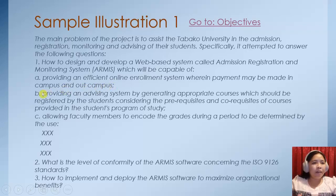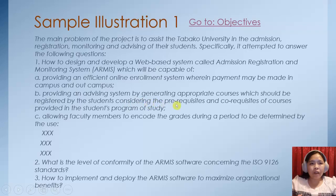Then, providing an advising system by generating appropriate courses which should be registered by the students, considering the prerequisites and corequisites of courses provided in the student's program of study. So the specific question also specifies the requirements — considering the prerequisites and corequisites of courses provided in the student's program of study.